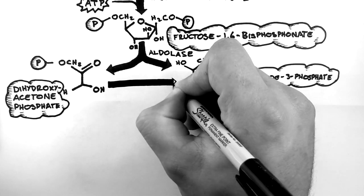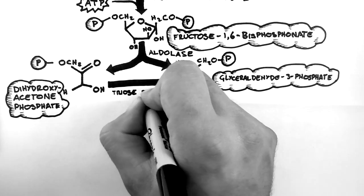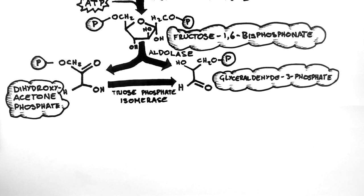The next step is conducted by another isomerase, the triose phosphate isomerase, and this converts the dihydroxyacetone phosphate into glyceraldehyde 3-phosphate.